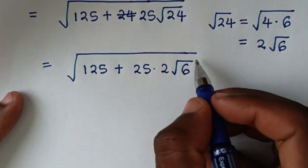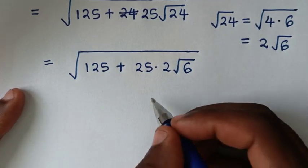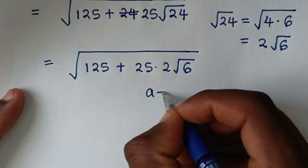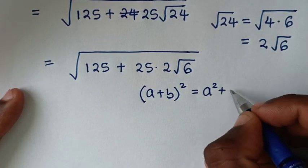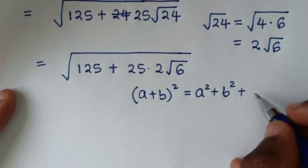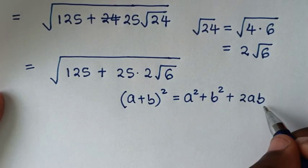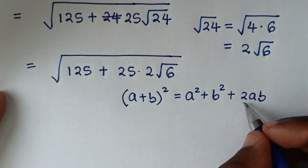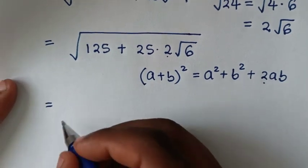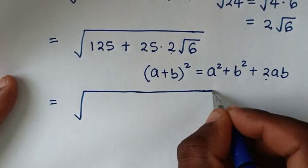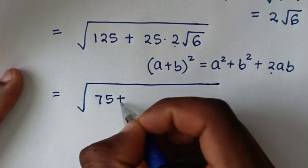From this expression, under the square root we want to express it in the form of the algebraic expansion (a plus b) squared, which equals a squared plus b squared plus 2ab. We will express our expression in this form. We already have the factor of 2 here.